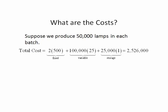Producing 50,000 lamps in two batches costs $2,526,000.